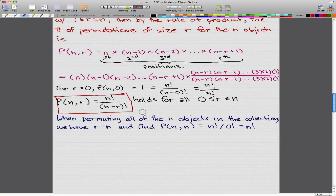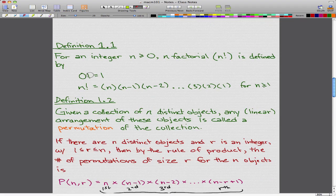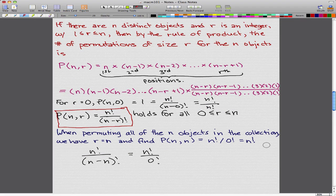When permuting all of the n objects in the collection, we have r = n, so we plug in n for r, and that will give us n!/(n-n)! = n!/0! = n!. Because if we use the formula, it's n!/(n-n)!, and that is n!/0!. 0! = 1, which gives us n!.